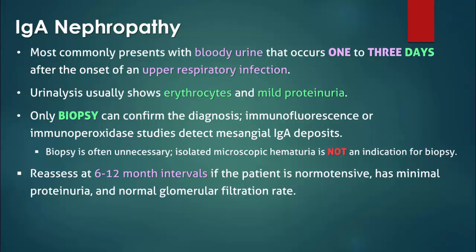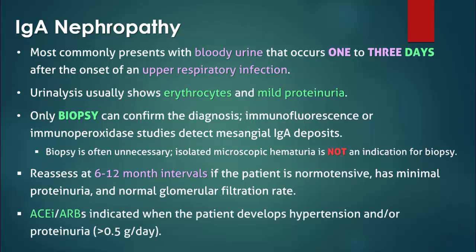No specific treatment is needed for normotensive patients with isolated hematuria, proteinuria less than 0.5 grams per day, and a normal GFR. Instead, their condition needs to be monitored with blood pressure measurements, urinalysis, and renal function testing. ACE inhibitors are indicated once the patient develops hypertension and proteinuria greater than 0.5 grams per day.